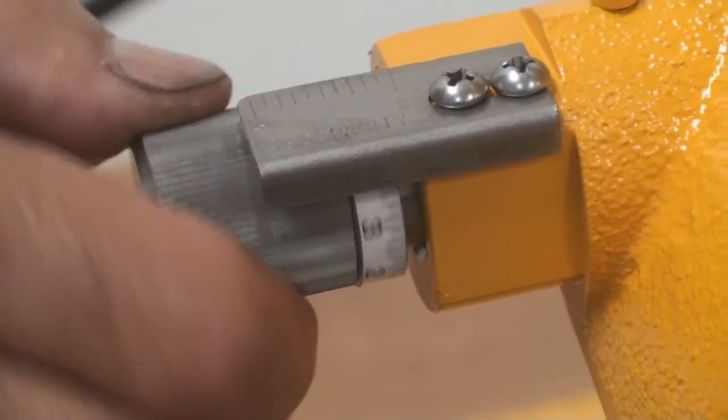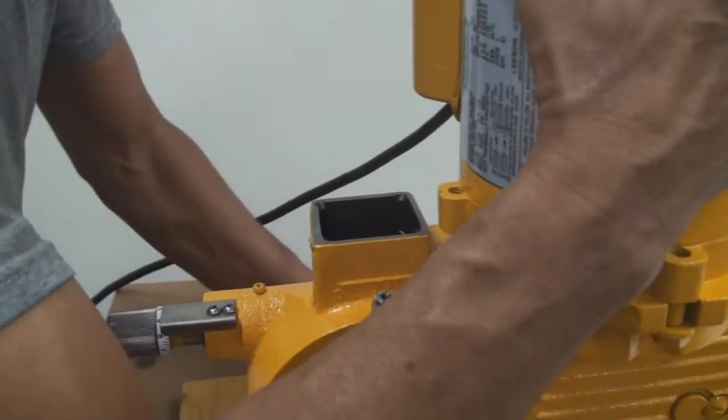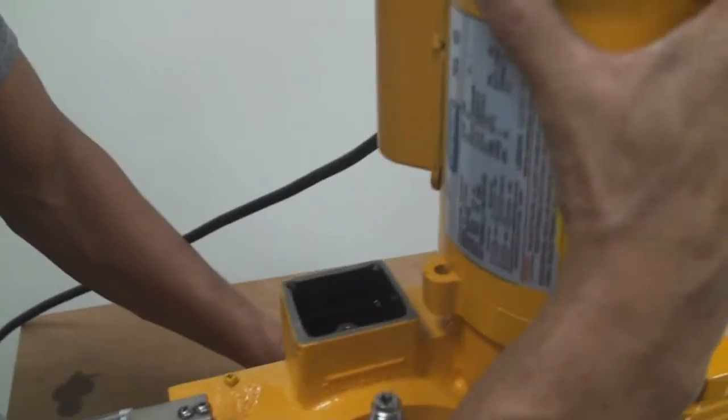Tilt the pump gently 30 degrees to the left and check for air bubbles. If there are no more air bubbles coming out, proceed to the next step.